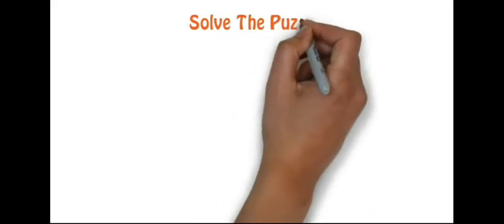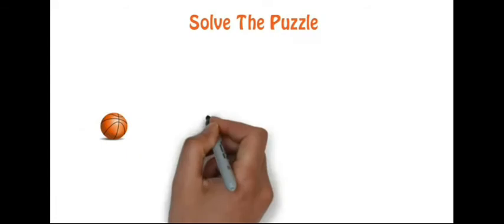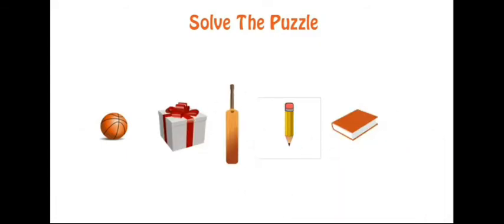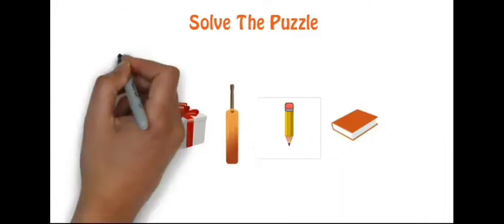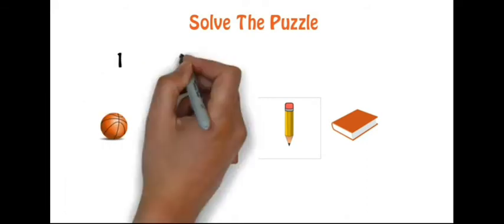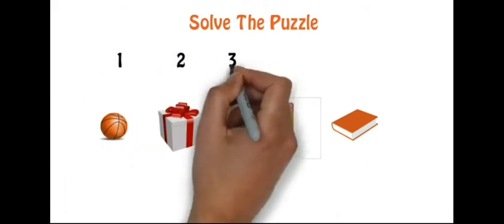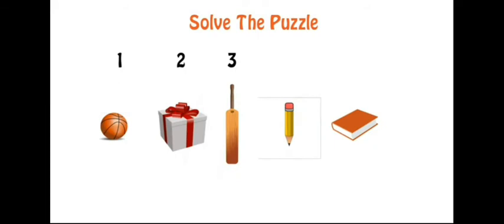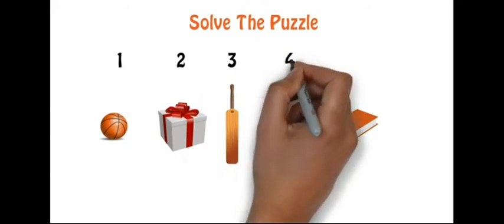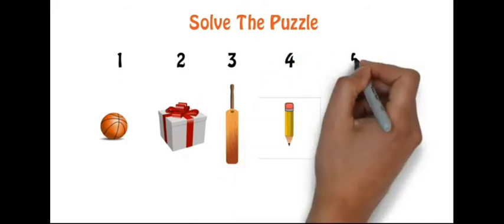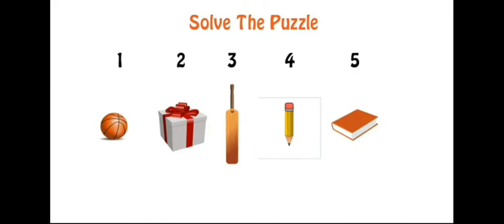Now you have to solve the puzzle. Here I have drawn some pictures — ball, gift, bat, pencil, and book. We will write the numbers: number 1 is ball, number 2 is gift, 3 is bat, pencil is on 4, and book is on 5.